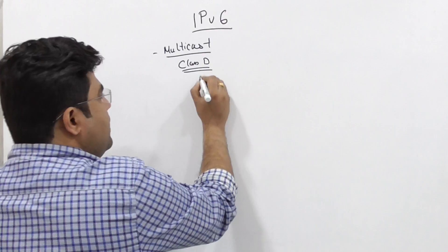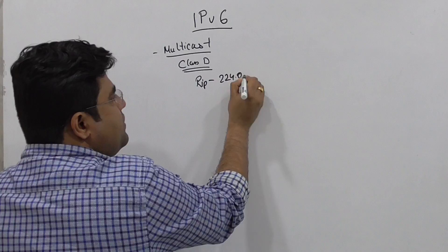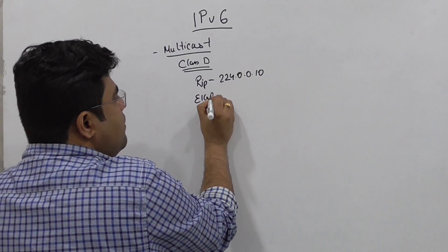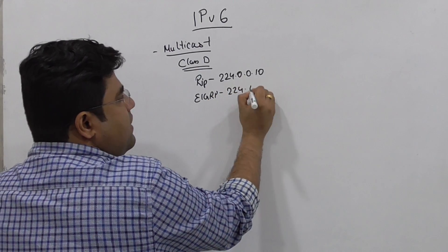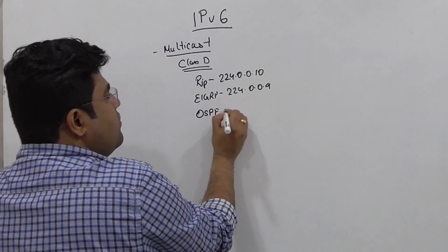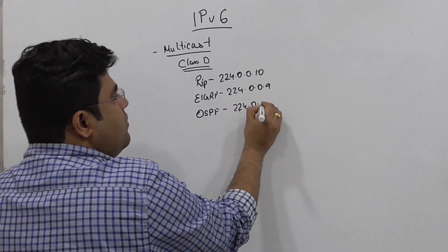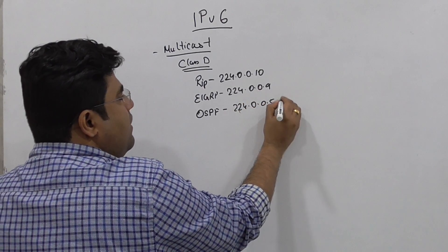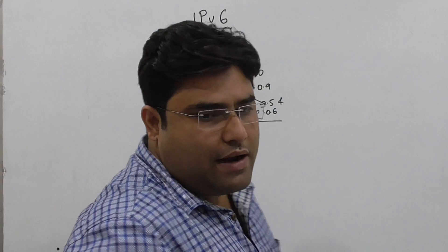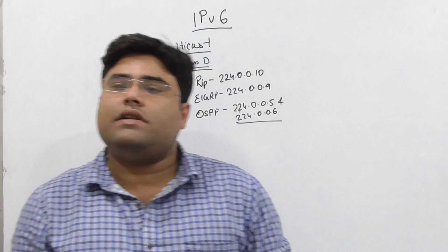We have routing protocols that use Multicast IP. RIP uses 224.0.0.10. EIGRP also uses a multicast address. OSPF uses 224.0.0.5 and 224.0.0.6. So Multicast IPv4 is used for routing protocols.